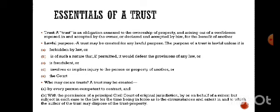The essentials of a trust: first, a trust is an obligation annexed to the ownership of property, arising out of confidence reposed in and accepted by the owner or declared and accepted by him for the benefit of another. Second, it should be for a lawful purpose. A trust must be created for a lawful purpose — the purpose is unlawful if it is forbidden by law, defeats any legal provision, is fraudulent, or involves injury to persons or property.